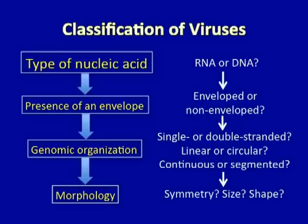So when classifying a virus, the first question to ask is: is it an RNA or a DNA virus? Then, is it enveloped or non-enveloped? Then, is the nucleic acid single or double-stranded? Does it form a circle or is it linear? Is it continuous or is it segmented? Segmented viruses have individual genes on separate strands of nucleic acid. And finally, its size, shape, and symmetry can be used to classify these viruses even further.